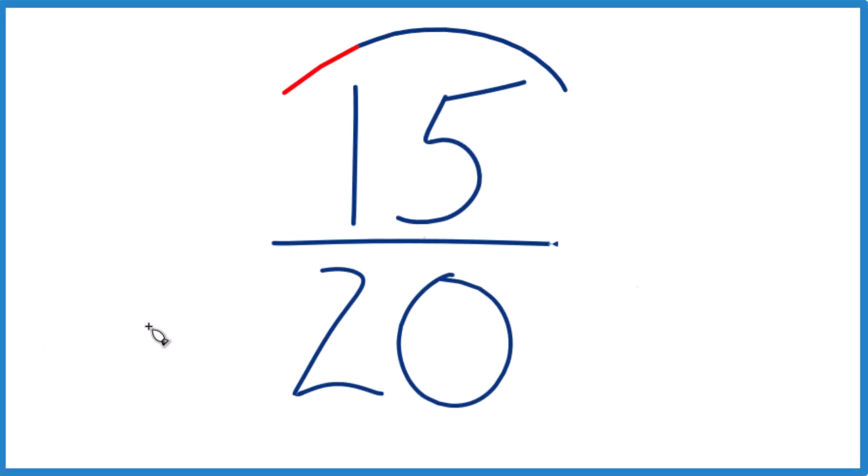Let's reduce the fraction 15/20 down to its simplest form or lowest terms. We're looking for a number that goes into 15 and 20, a whole number that goes in there evenly. I know that 5 goes into 15 and 20.